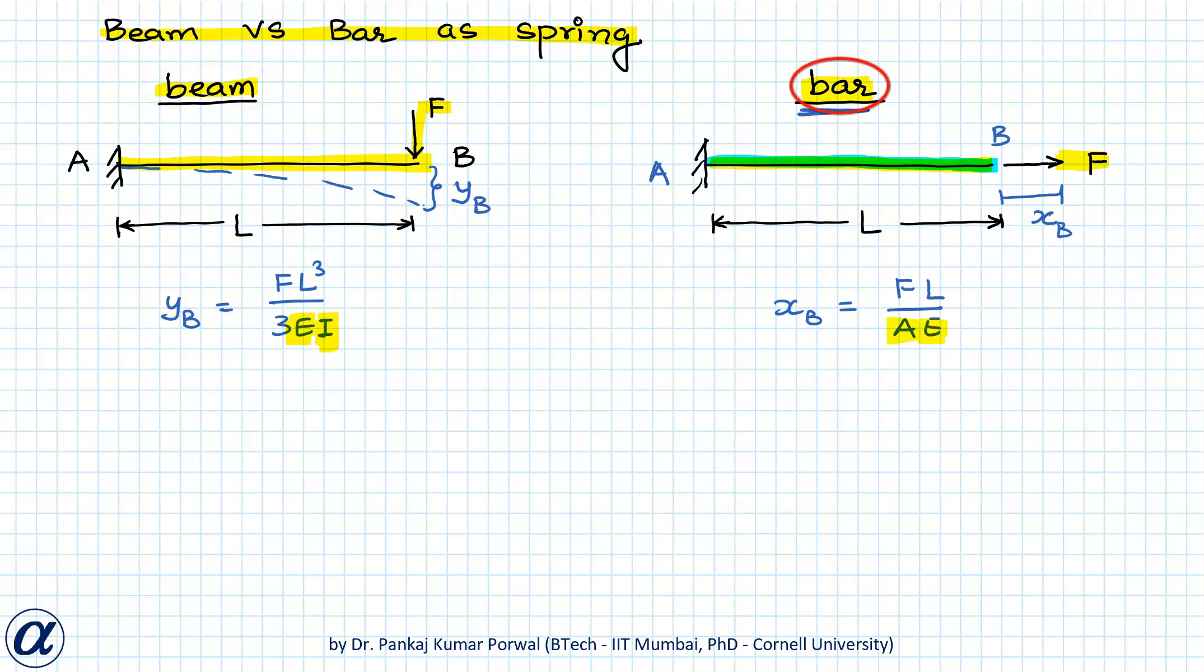So from these equations I can write f equals 3ei upon l cube into yb. And if I compare that with f equals kx, and if x is yb, then k will be equals to 3ei upon l cube.